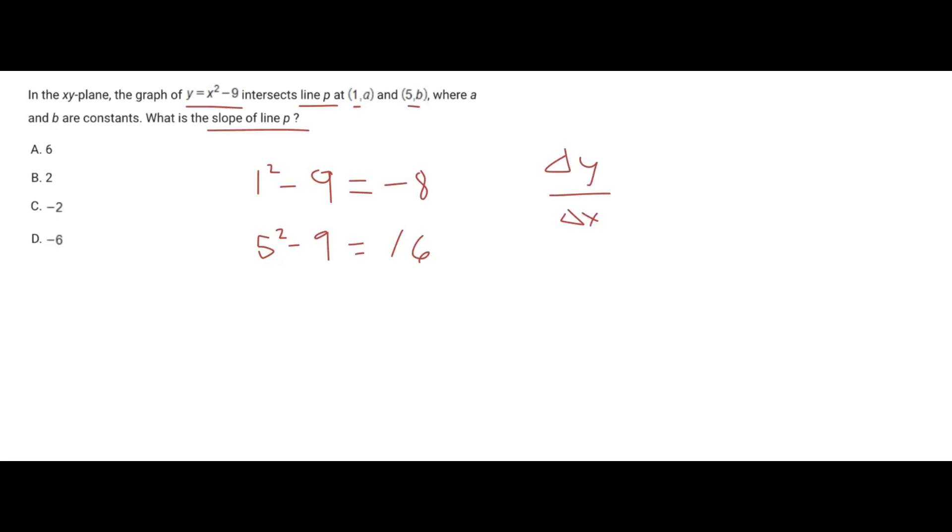So our change in y is from negative 8 to positive 16, so that's going to be a difference of 24. And so 24 will go on top here for our change in y. And now our change in x is just between 1 and 5, so to go from 1 to 5, that's a change of 4, positive 4. So ultimately our slope is 6, and so our answer choice is letter A.